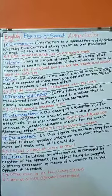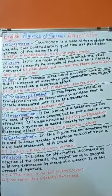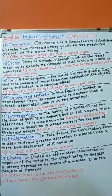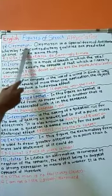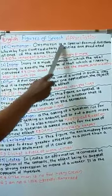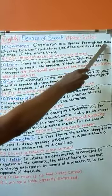So let's begin our session with the next type, that is the 13th type of Figures of Speech: Oxymoron. Oxymoron is a special form of antithesis,